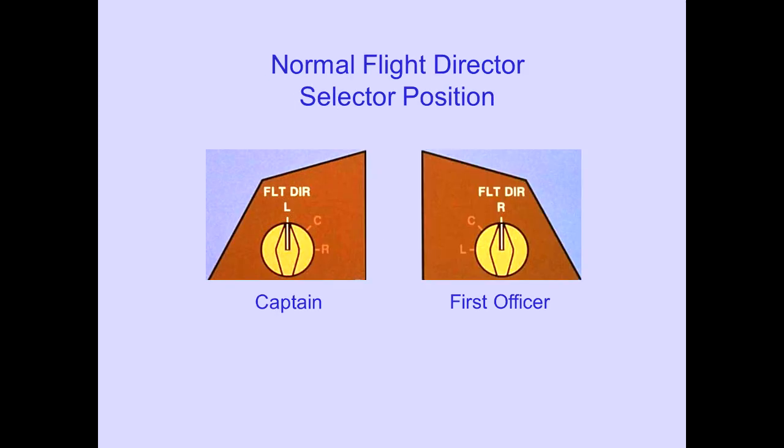The Flight Director source selector is used to select which flight control computer, FCC, provides the required commands. The left, center, or right flight control computer can be selected. Normally, the Captain's Flight Director selector is set to the left flight control computer, and the First Officer's Flight Director selector is set to the right flight control computer.